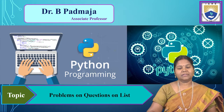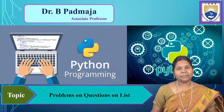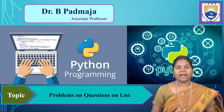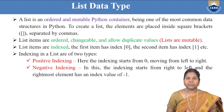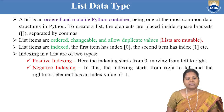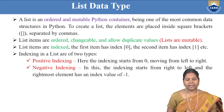First of all, let us start with what do you mean by a list data type, how to create a list and how to work with the list. A list is an ordered and mutable data type, or you can say that it is a mutable Python container. It is one of the most important and most popular data structures in Python.